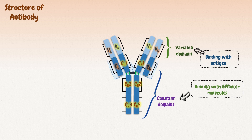The variable regions of both light and heavy chains make two identical antigen-binding segments called fragments antigen-binding, or FAB. FAB is usually made up of one variable and one constant domain of both light and heavy chains. The constant domains of the heavy chains make a crystallizable region called fragment crystallizable, or FC.